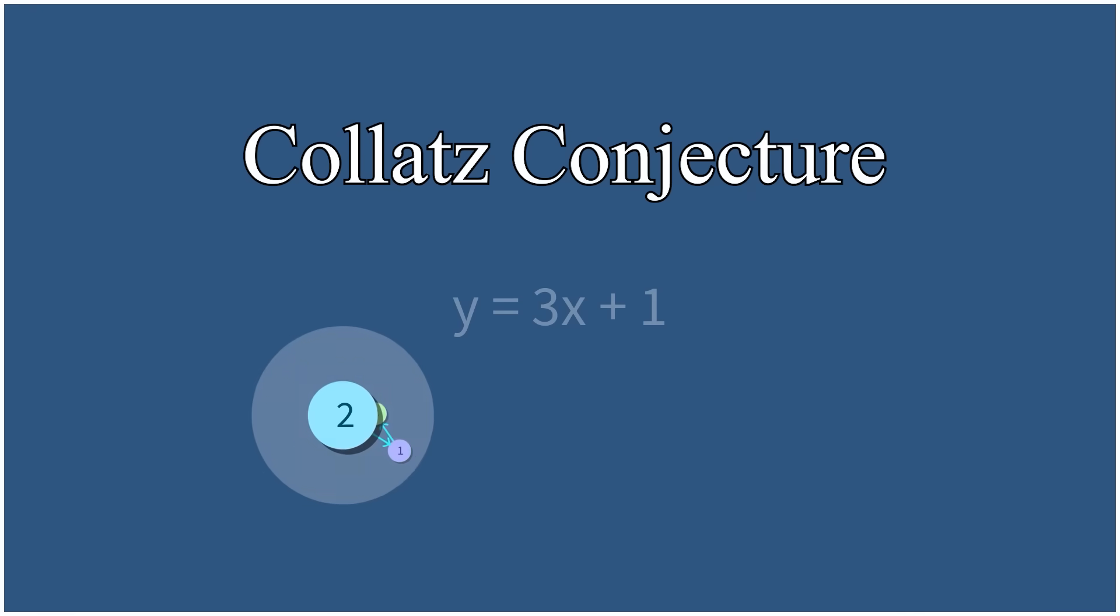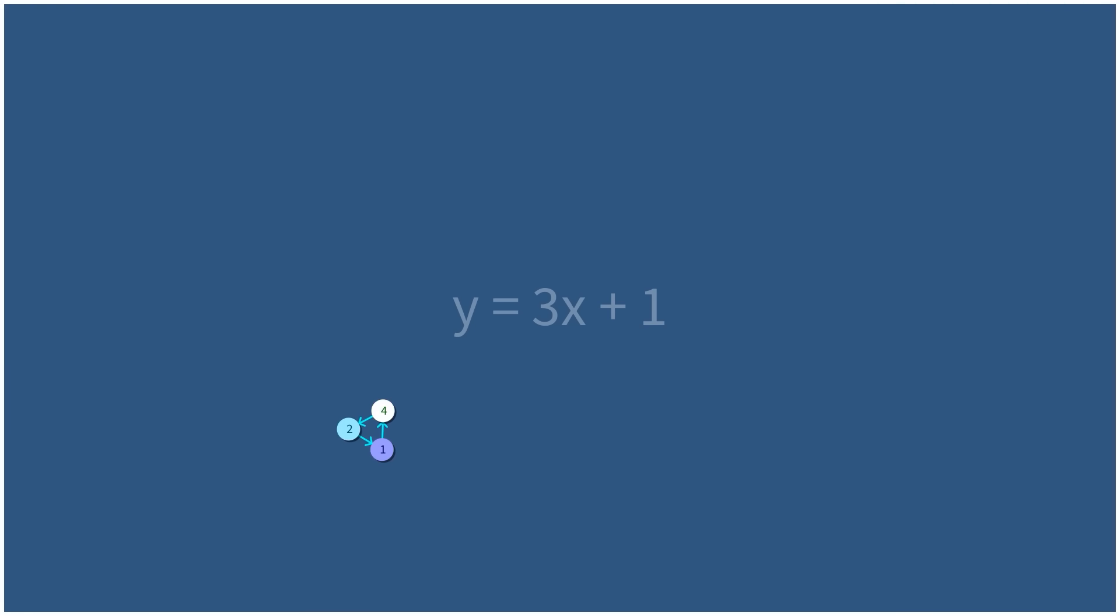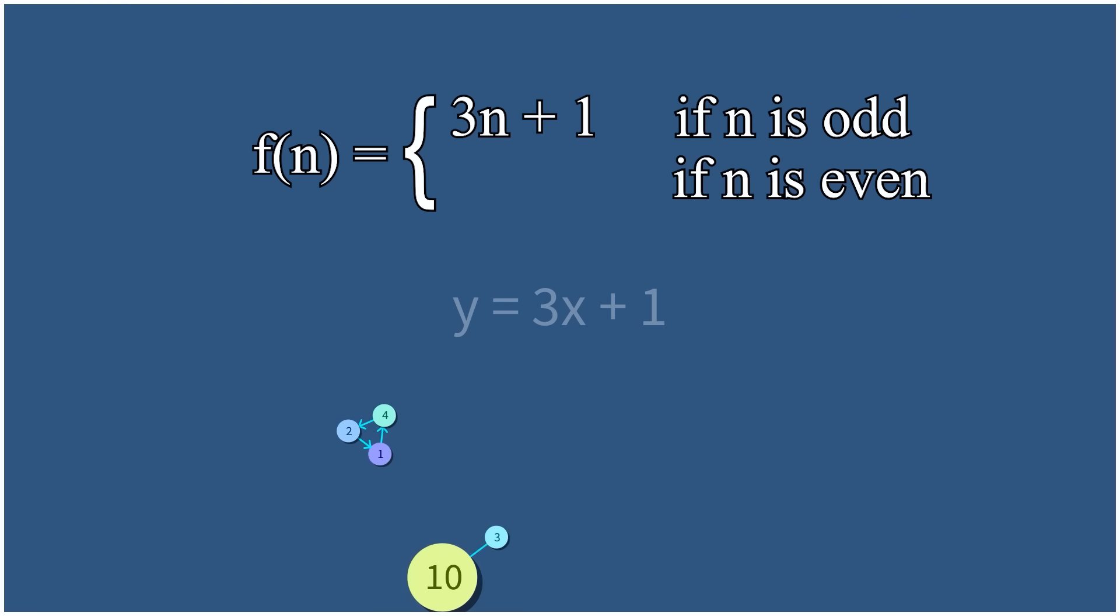This is the Collatz Conjecture. The rules of this game are simple. Pick any integer, like 3, and then if it's odd, multiply by 3 and add 1, bringing you to 10. And then if it's even, like 10 is, then divide by 2, bringing you to 5.